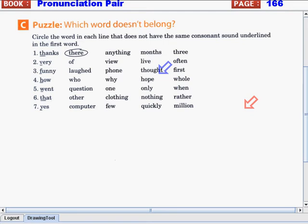Okay guys, are you ready with your answers? Great! A while ago, I asked you to answer activity letter C Puzzle, which word doesn't belong? Direction: circle the word in each line that does not have the same consonant sound underlined in the first word. Now, let's check your answers.